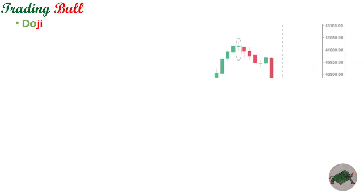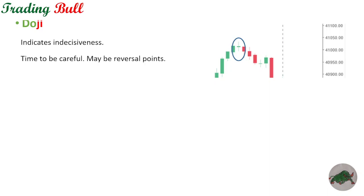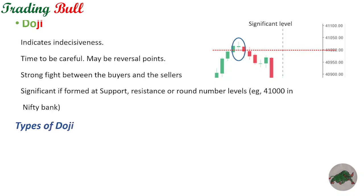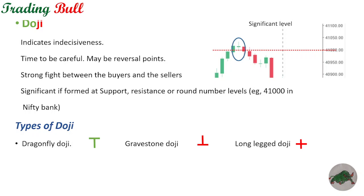Next are the Doji candles. A Doji candle indicates indecisiveness and signals that it is time to be careful. It may be a reversal point, so we should be very careful whenever a Doji candle is formed. It indicates a strong fight between buyers and sellers and is very significant when formed at support, resistance, or round number levels, such as 41,000 in Nifty Bank. Common types include the Dragonfly Doji, Gravestone Doji, and Long-legged Doji.